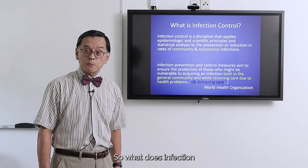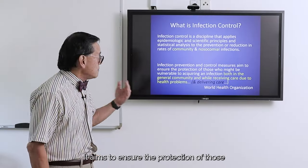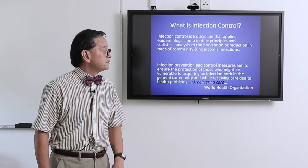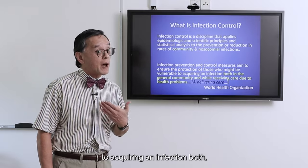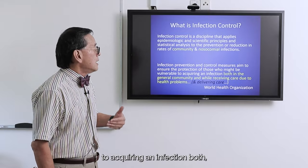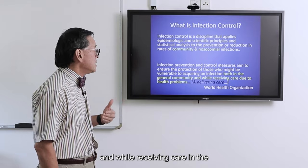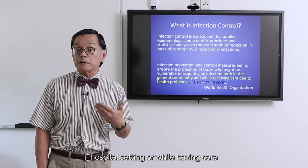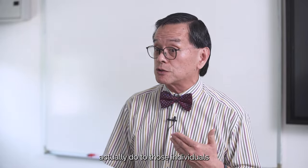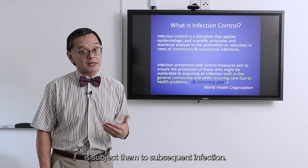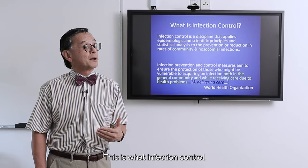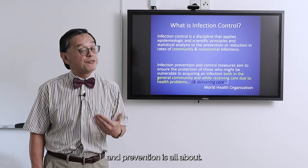So what does infection prevention control aim to do? It aims to ensure the protection of those who might be vulnerable to acquiring an infection, both in the general community and while receiving care in the hospital setting or while having care being delivered to them. You really want to protect those people that come to the hospital — they are already ill, and the worst thing you could do is subject them to a subsequent infection. This is what infection control and prevention is all about.